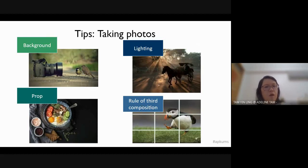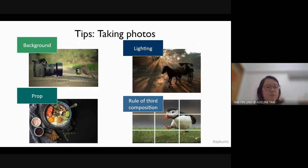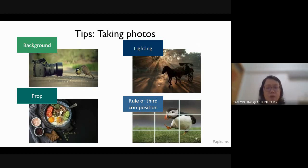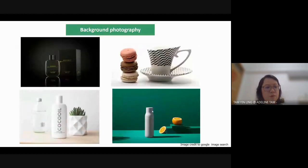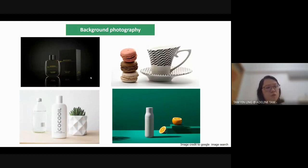The rule of thirds composition means that almost 60–70 percent of the photo must be the things you want to show — more than 30 percent. When you look at a photo, if the background is very dark and your product is also dark, you can hardly see what is inside.